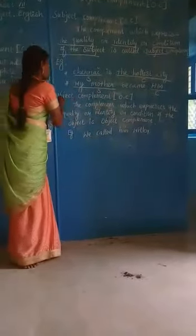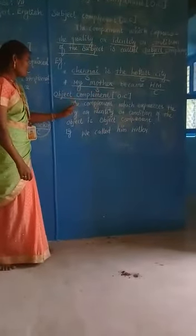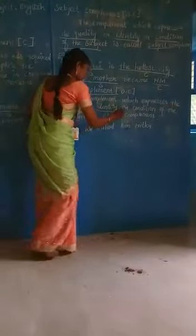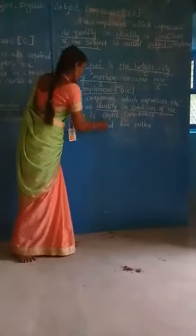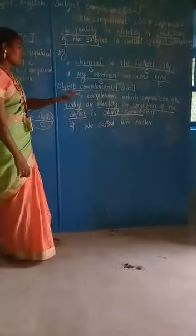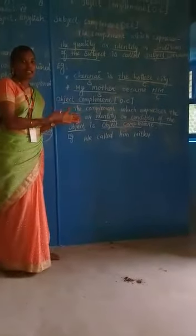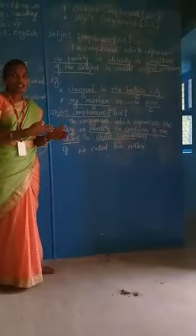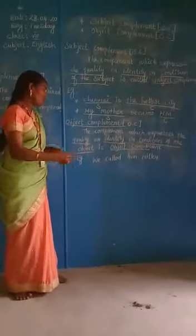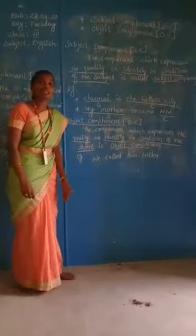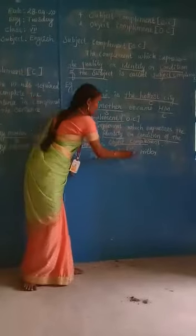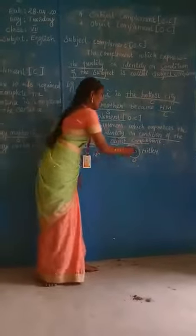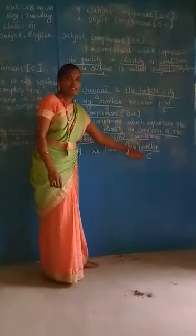Next one is object complement. Symbol is OC. What is object complement? The complement which expresses the quality or identity or condition of the object is called object complement. For example, 'We called him Hitler.' Whom is called Hitler? Him. So 'him' is the object and 'Hitler' is the complement — this is object complement.